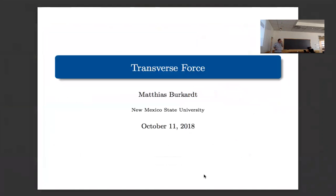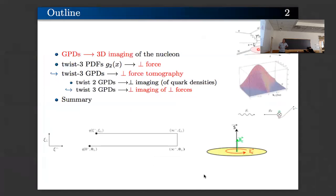I would like to talk about the various aspects of the transverse force that acts on quarks in deep inelastic scattering. I'm going to start with a brief introduction about 3D imaging, showing some new results that resemble old ones, and review how 3D imaging was obtained. Then I'll talk about how the polarized PDF G2 is related to the transverse force acting on quarks in DIS, and we move from PDFs to GPDs. In the case of twist-3, this allows us to obtain position space information about the transverse force.